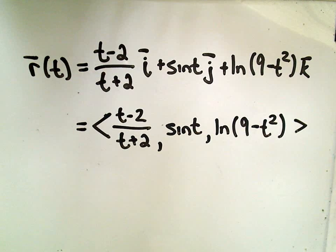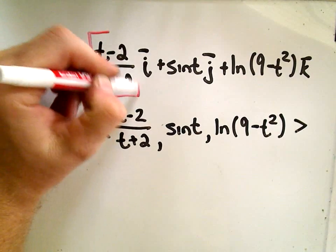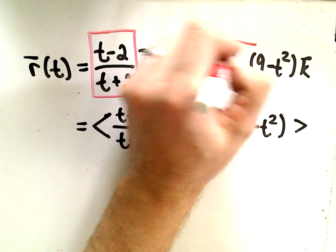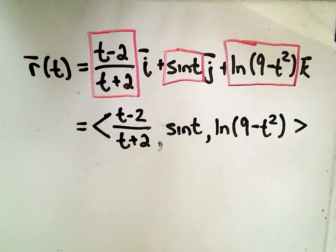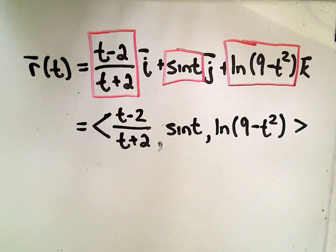The idea in these problems is basically you just have to look at each piece individually. Find the domain of each piece individually, of all the components, and you're looking for values of t that will satisfy all of those simultaneously.